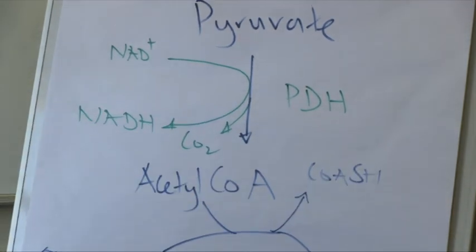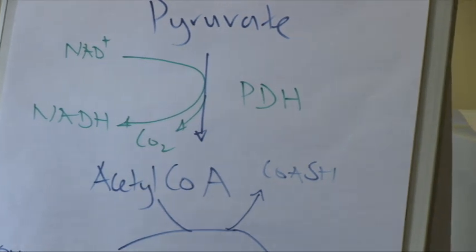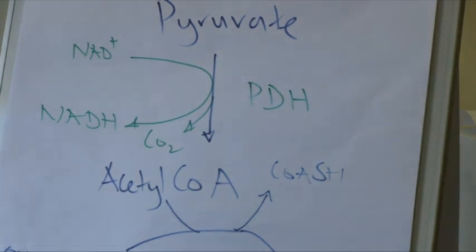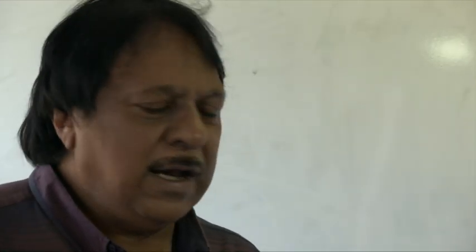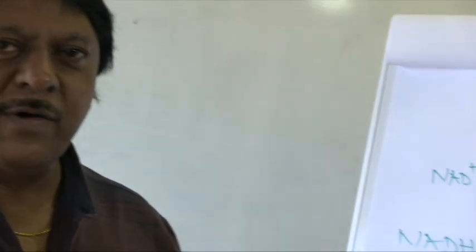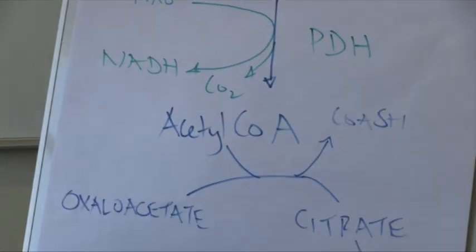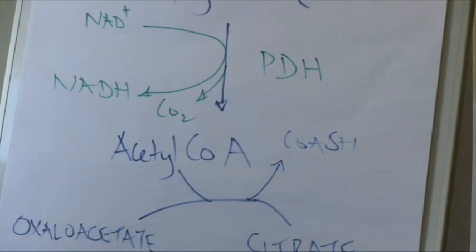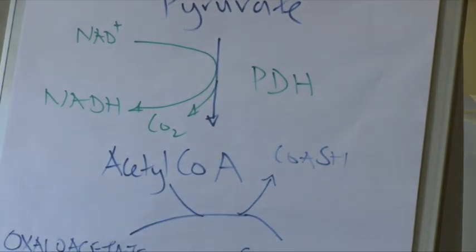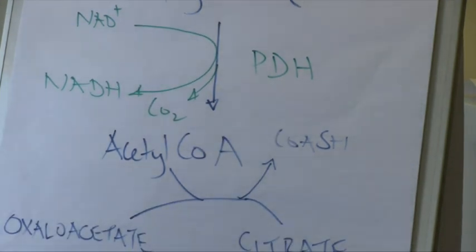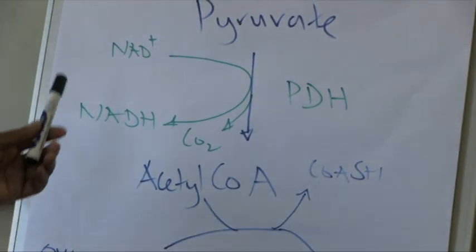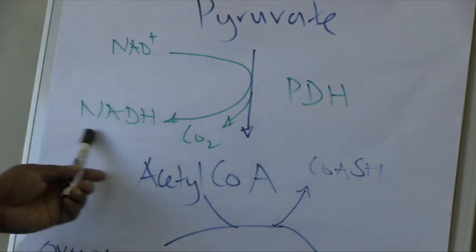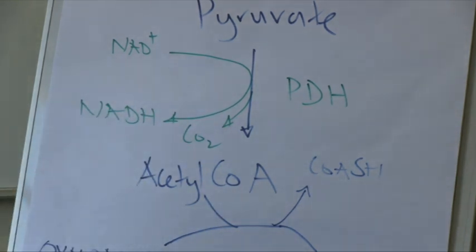This conversion of pyruvate to acetyl coenzyme A is catalyzed by an enzyme complex known as PDH, or pyruvate dehydrogenase complex. This is an enzyme complex consisting of three enzymes which requires a number of cofactors, and one of these cofactors is the vitamin thiamine — so this enzyme is very dependent on thiamine. In the absence of thiamine, as in an alcoholic patient, the conversion of pyruvate to acetyl-CoA is significantly impeded. As is characteristic of dehydrogenase reactions, NAD+ is reduced to NADH, which will yield energy when it enters complex one of the electron transport chain.